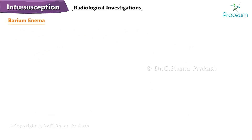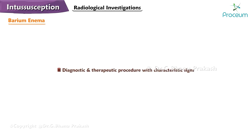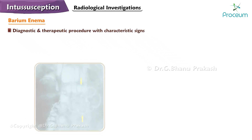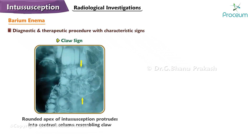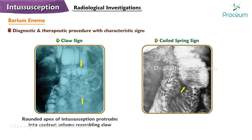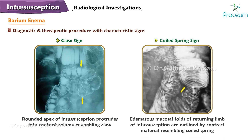Barium enema is both a diagnostic and therapeutic procedure for intussusception with characteristic signs. The claw sign shows the rounded apex of the intussusception protruding into the contrast column, resembling a claw. The coiled spring sign shows edematous mucosal folds of the returning limb of the intussusception outlined by contrast material, resembling a coiled spring.